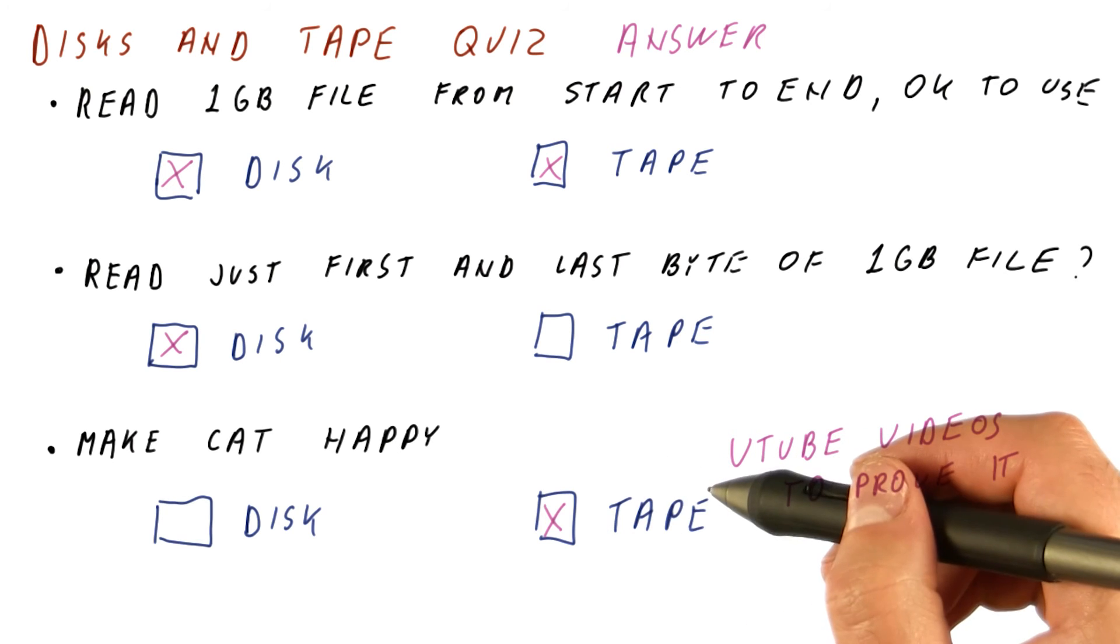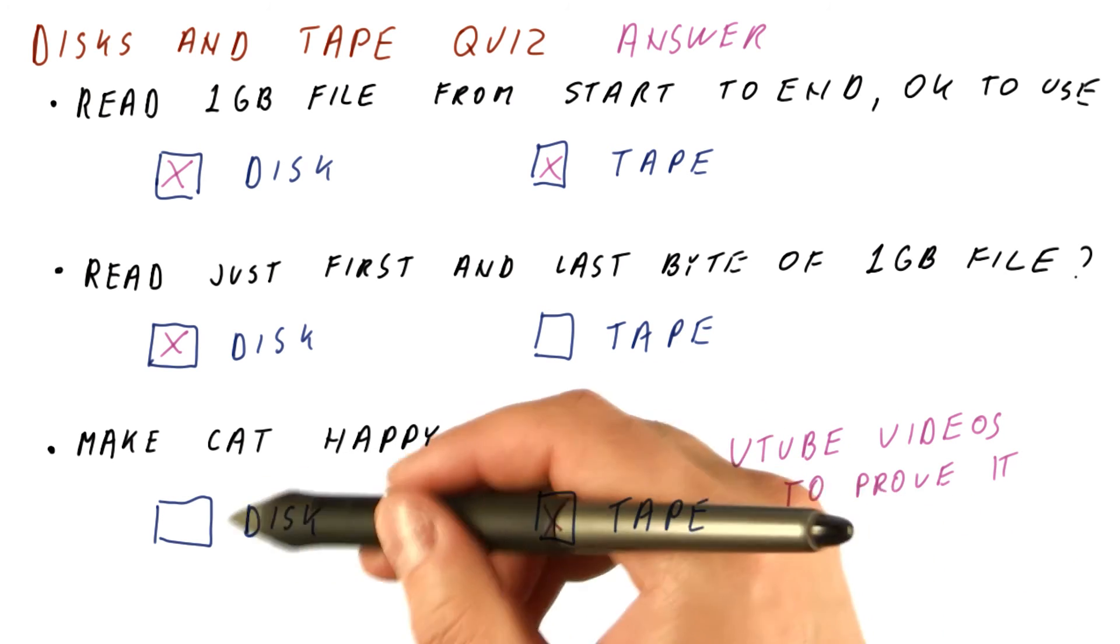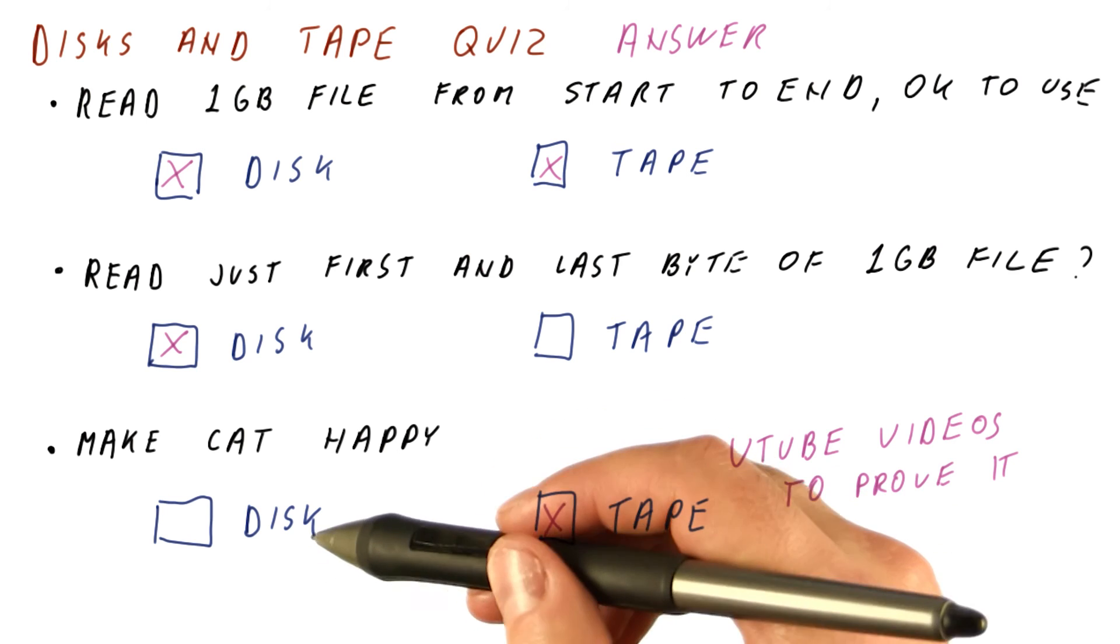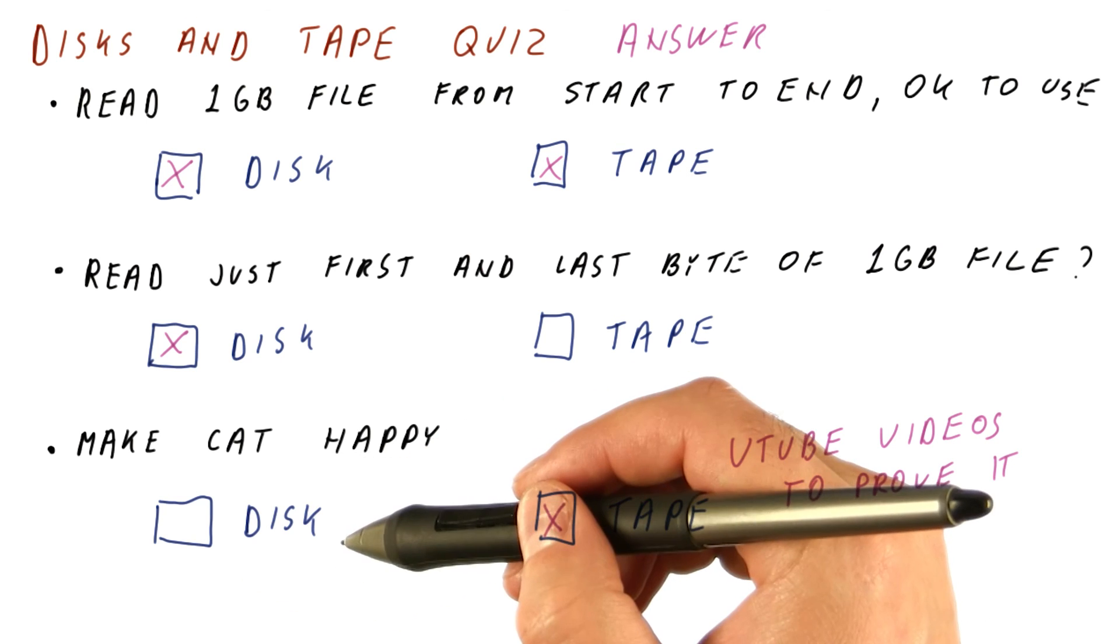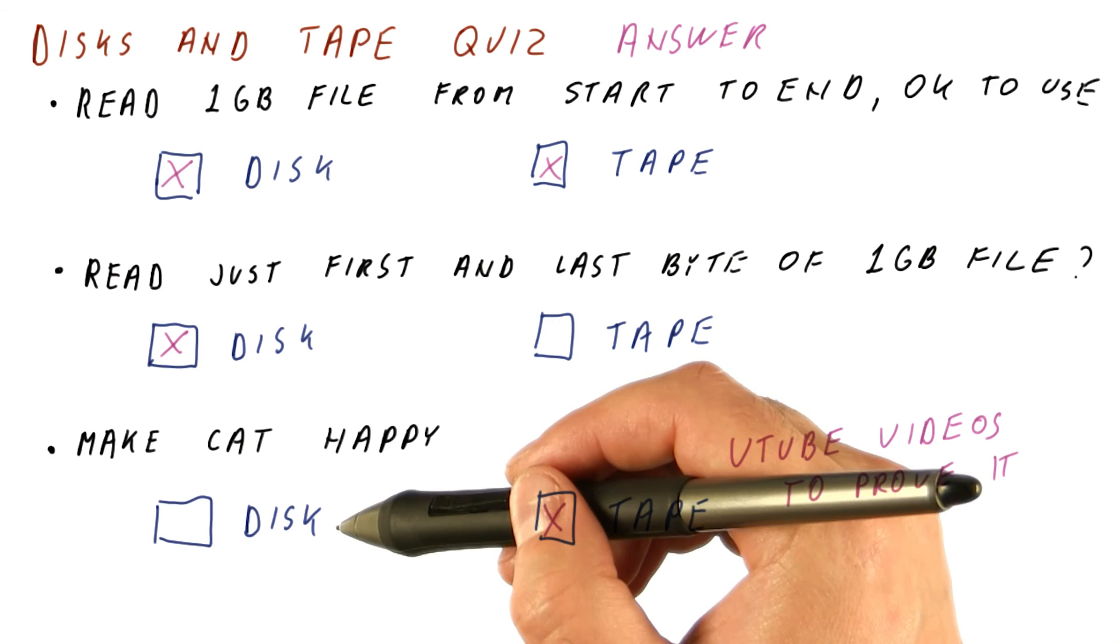Cats like stringy things much more than disky things, especially if the disky things are enclosed in a metal rectangular box.